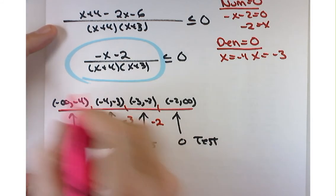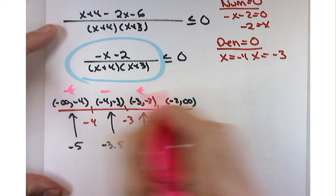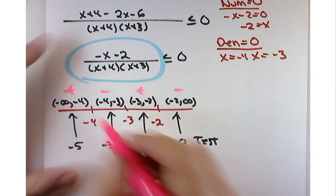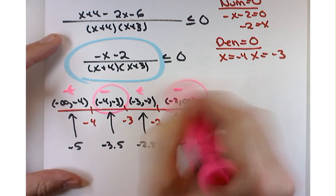All right, so let's see. It was positive, negative, positive, negative. So I want the negative ones, so that's going to be those two.